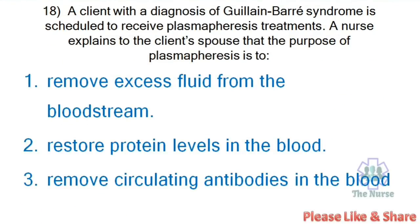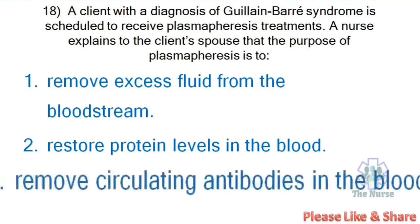Next question: A client with a diagnosis of Guillain-Barré syndrome is scheduled to receive plasmapheresis treatment. A nurse explains to the client's spouse that the purpose of plasmapheresis is to: remove excess fluid from the bloodstream, restore protein levels in the blood, or remove circulating antibodies in the blood. Correct answer: Remove circulating antibodies in the blood.